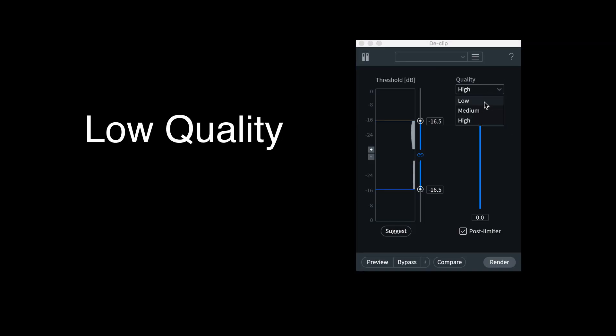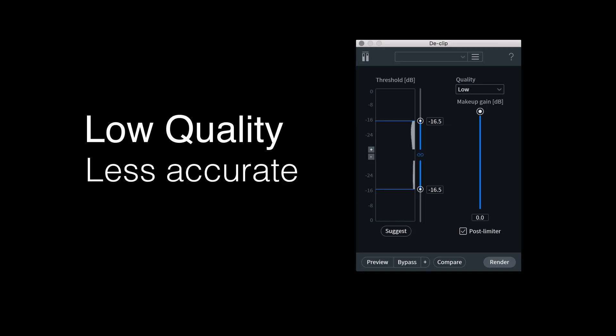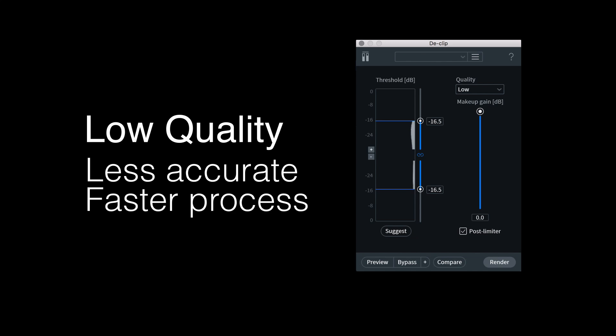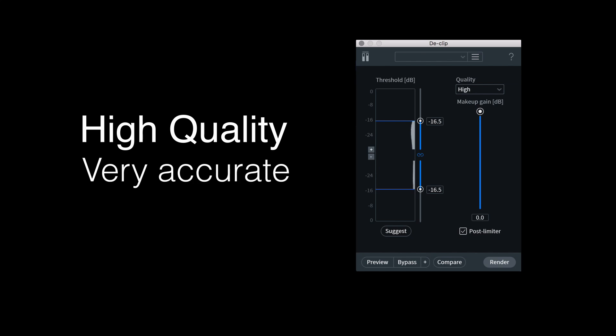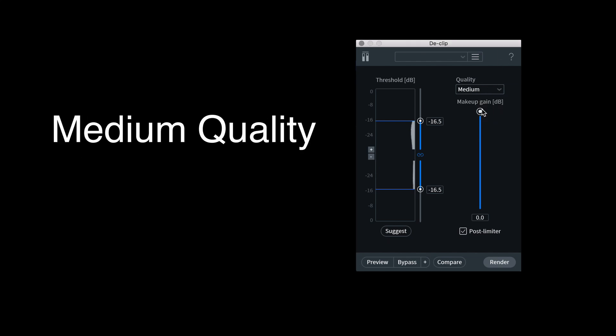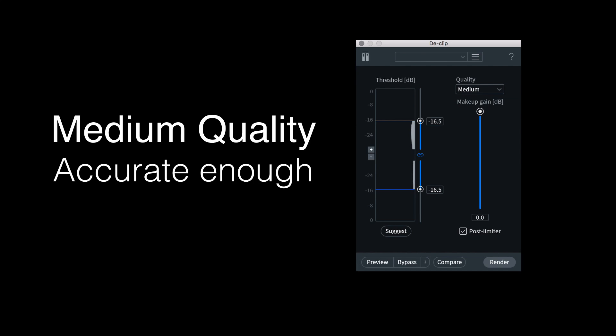The quality setting is exactly that. If you select low quality, the plugin will be a little bit less accurate but it'll operate faster because it's not doing as much math. High quality is the inverse — it'll be really accurate but it'll take a long time. Medium quality is the balance between the two, so you don't have to spend too much time waiting on processing and you'll get a reasonable amount of quality out of it.